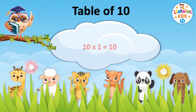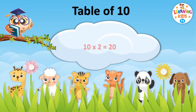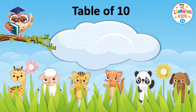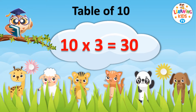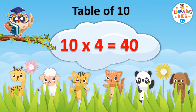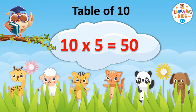Ten ones are ten. Ten twos are twenty. Ten threes are thirty. Ten fours are forty. Ten fives are fifty.